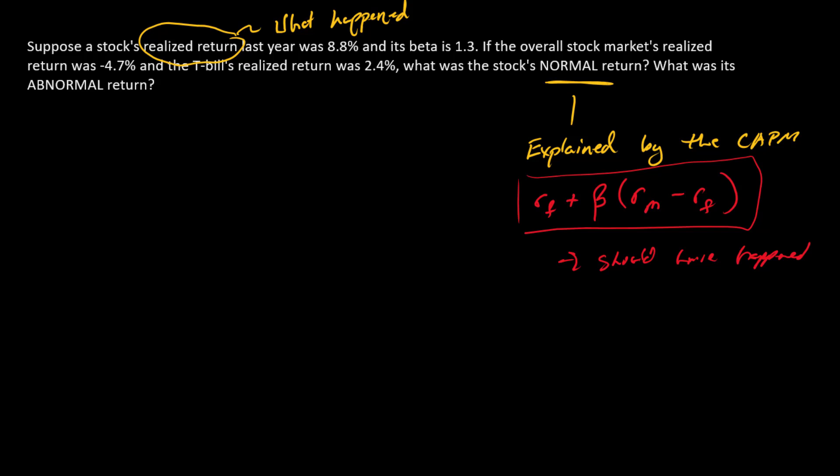So the abnormal return in contrast is the extra, that's the extra or the unexplained part of the return. And so this can be a positive number or a negative number, and it's just going to equal the realized return minus the normal return.